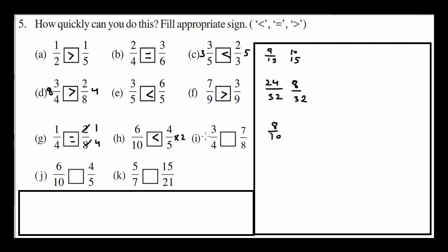Now 3 over 4. Multiply with 2. 4 to the 8. And above numerator becomes 6. So 7 over 8 is greater than 3 over 4. So greater sign.